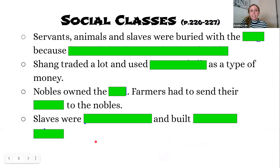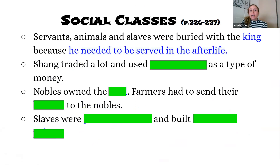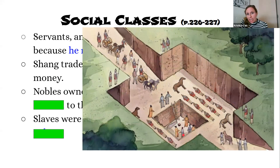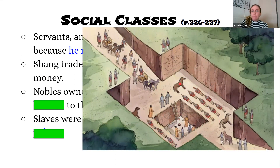As for social classes, servants, animals, and slaves were buried with the king because he needed to be served in the afterlife. When the king was buried it might have looked something like this textbook picture — they dug down below into a burial chamber they were decorating, and that's where the king himself would be buried. Lying here are servants, warriors, and even killed horses because he would need those horses. This should remind you of ancient Egypt with the underground tombs in the Valley of the Kings — a similar concept. We know about this because archaeologists have excavated burial sites of ancient kings.